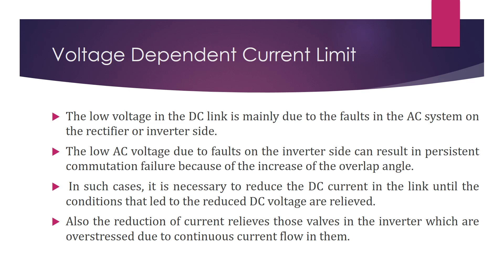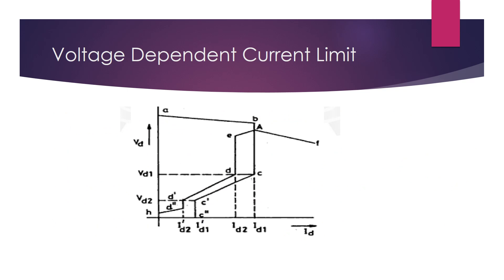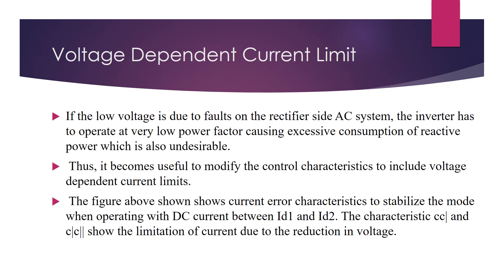The reduction of current relieves those valves in the inverter which are overstressed due to continuous current flow. The voltage dependent current limit characteristics of both stations are shown. If low voltage is due to a fault on the rectifier side AC system, the inverter has to operate at a very low power factor, causing excessive consumption of reactive power, which is undesirable. Thus, it becomes useful to modify the control characteristics to include voltage dependent current limits.